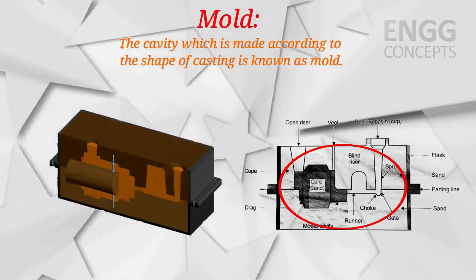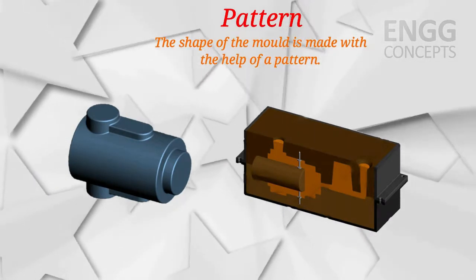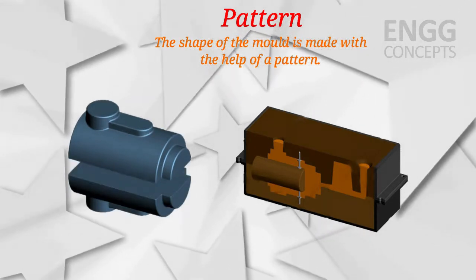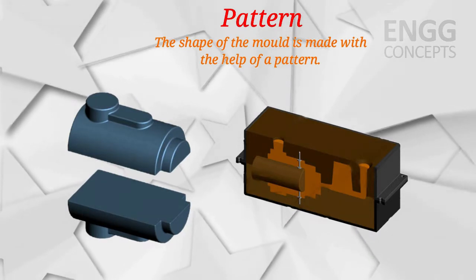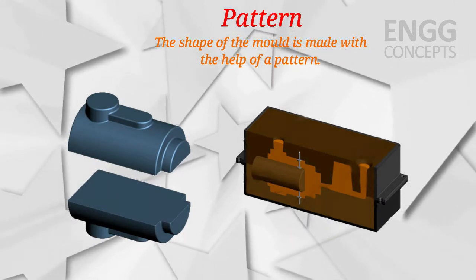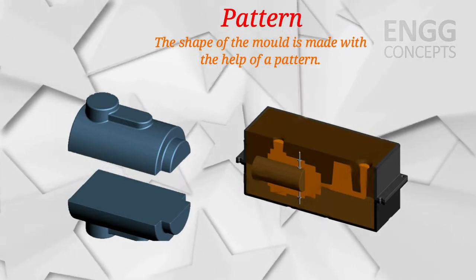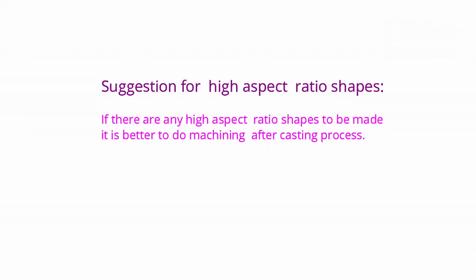The cavity made according to the shape of the casting is known as the mold. The shape of the mold is made with the help of a pattern. A pattern is a replica of the final object to be made — it has the same geometrical features as the part to be cast, but the dimensions differ. This is mainly due to two reasons: the need to provide allowances, and the inclusion of core features within the pattern. In some casting processes, if it is not possible to produce shapes of high aspect ratio, it is better to perform machining after the casting process.